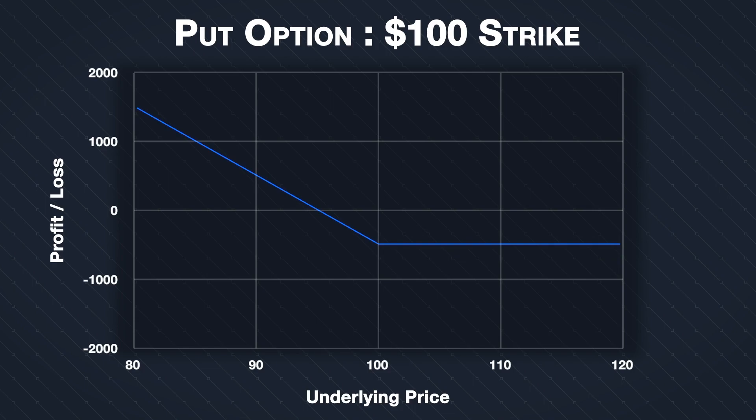By doing this we can deduce some of the pros and cons of each. Suppose the stock is trading at $100 and there is a put option for this stock with a strike price of also $100. This put option has a price of $5 per share. This chart shows the profit and loss of the put option at expiration in blue and of shorting 100 shares of the underlying in red.